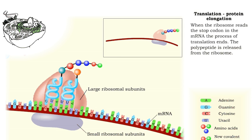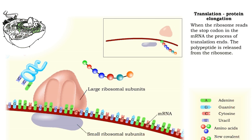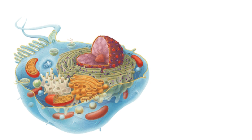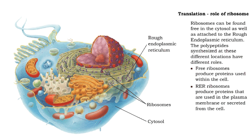Once the ribosome reads the stop codon in the mRNA, it releases the polypeptide. Proteins are synthesized at ribosomes, and the position of the ribosome determines where those proteins are used. Ribosomes in the cytosol produce proteins that will be used in the cell. Ribosomes at the rough endoplasmic reticulum produce proteins that are used in the membrane or secreted from the cell.